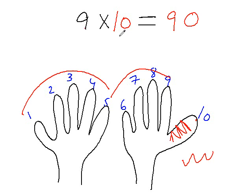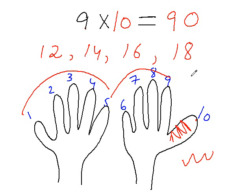Alright, so in the next class we would be learning the trick to memorize the times table — or the multiplication table — of even numbers between 10 and 20, like the multiplication table of 12, 14, 16, and 18. So we will be learning the trick to memorize these.